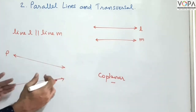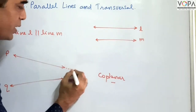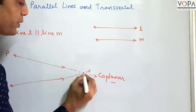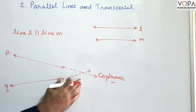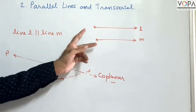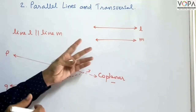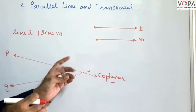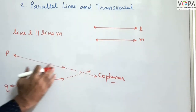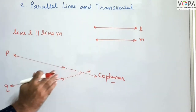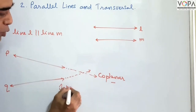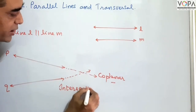But when we produce these lines — extend them further — then these lines start intersecting each other. So when we produce these lines, they will intersect at the next step. Then those will not be parallel lines; those will be intersecting lines.